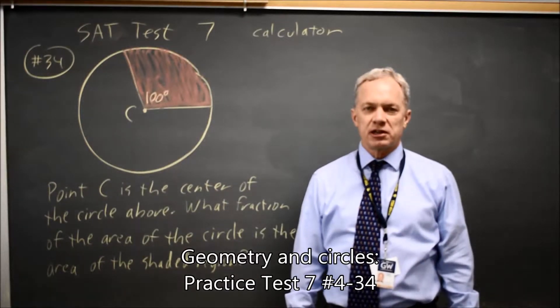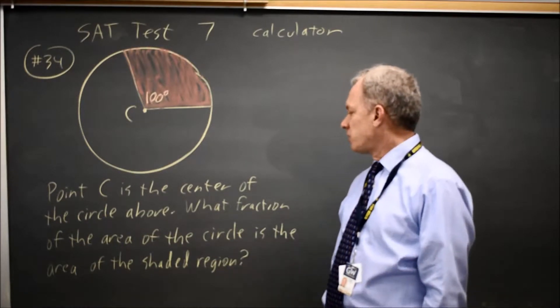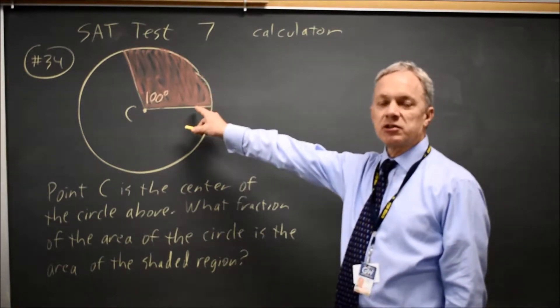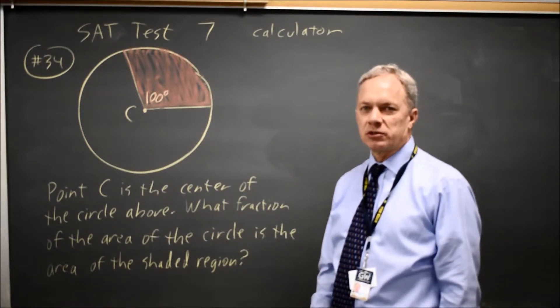This is SAT Test 7, calculator question number 34. College Board is asking about the fraction of the area of the circle that's shaded if you know that the central angle is 100 degrees.